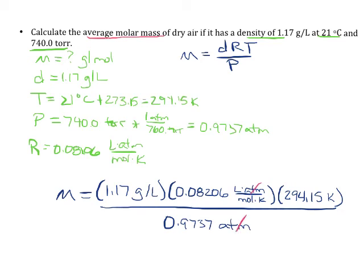Making sure all of our units cancel here, so we see the atmospheres canceling here. Temperature is canceling there, liters are canceling there. Going to be left with units of grams per mole, which makes sense for a molar mass. So in this case, our molar mass, and we're going to round this to three significant figures because of the density. Our molar mass is going to be equal to 29.0 grams per mole.